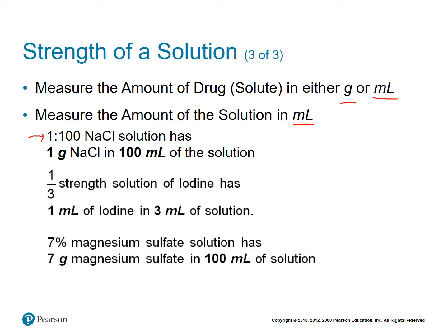We use grams for sodium chloride because it's a dry measure. In the next example, a one-third strength solution of iodine — again no units — so you assume that it's one milliliter of iodine for every three milliliters of solution. The difference here: we use milliliters instead of grams because iodine is a liquid, so you would use liquid measures. And then 7% magnesium sulfate would mean seven grams of magnesium sulfate for every 100 milliliters of solution.